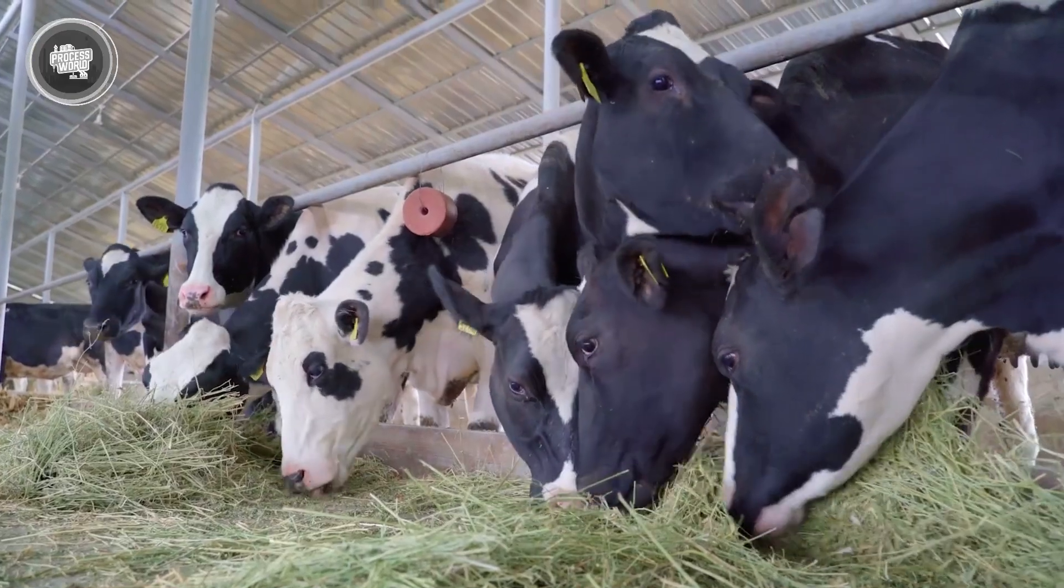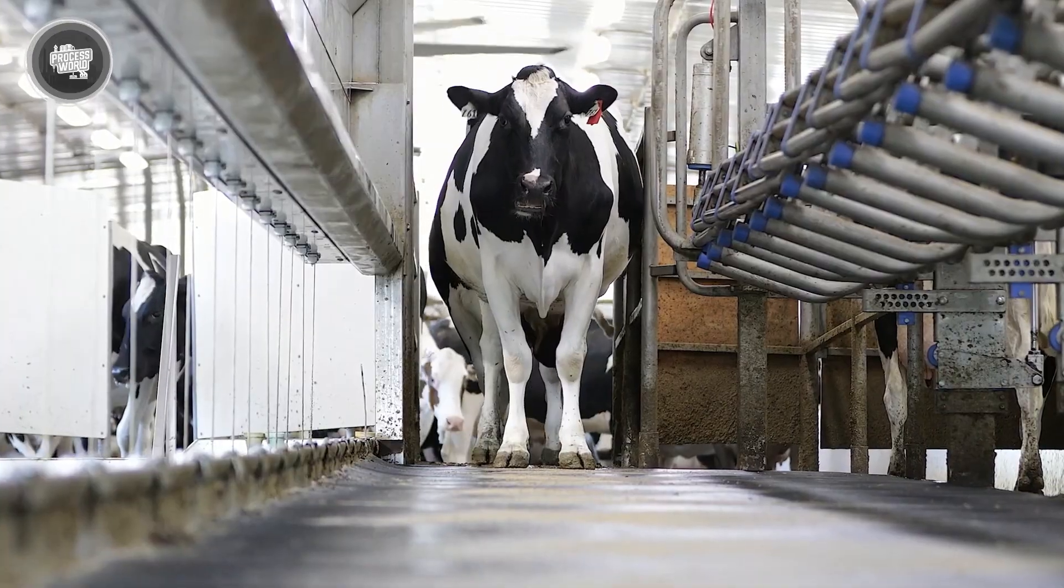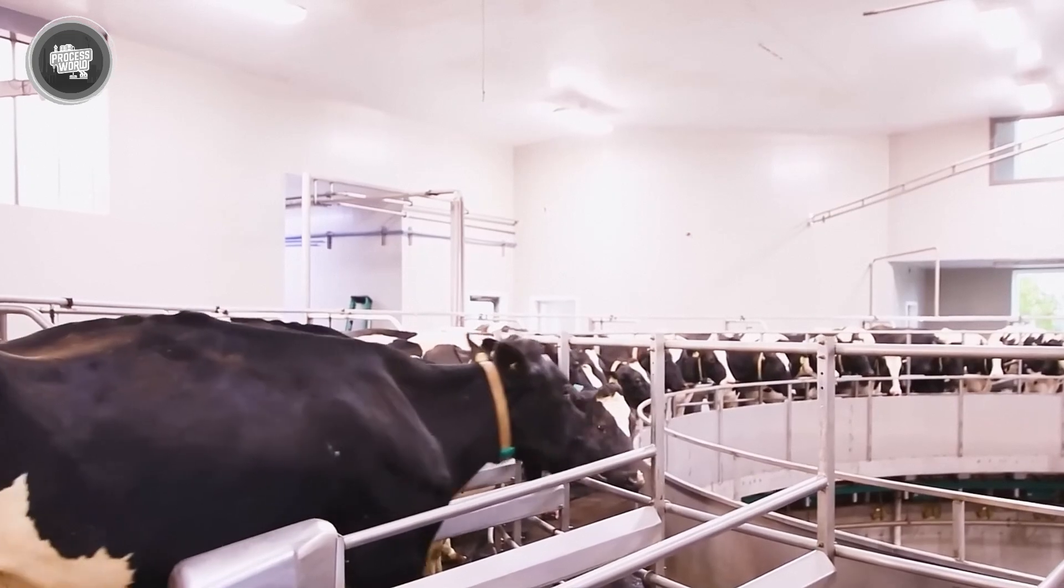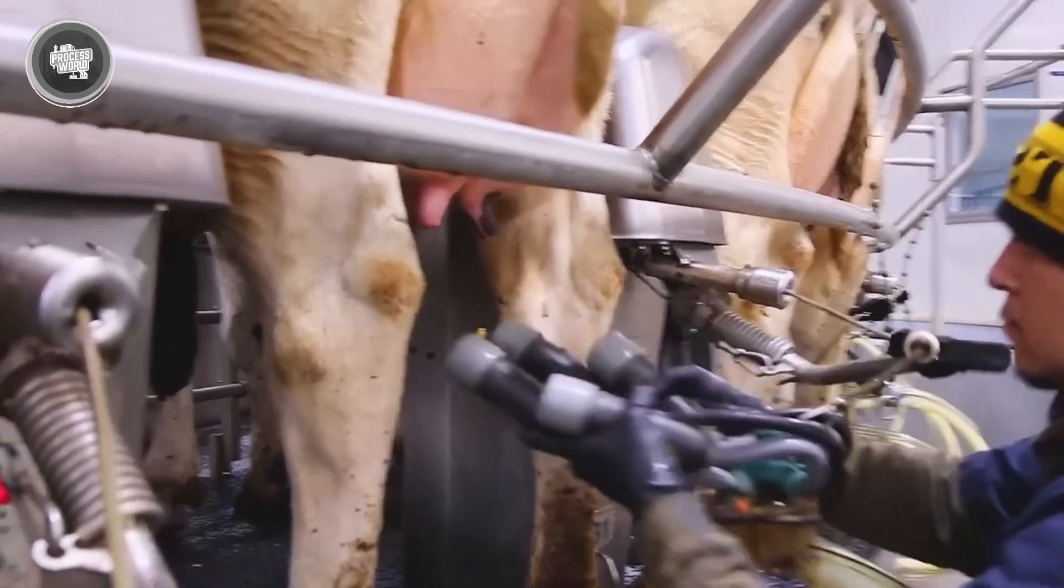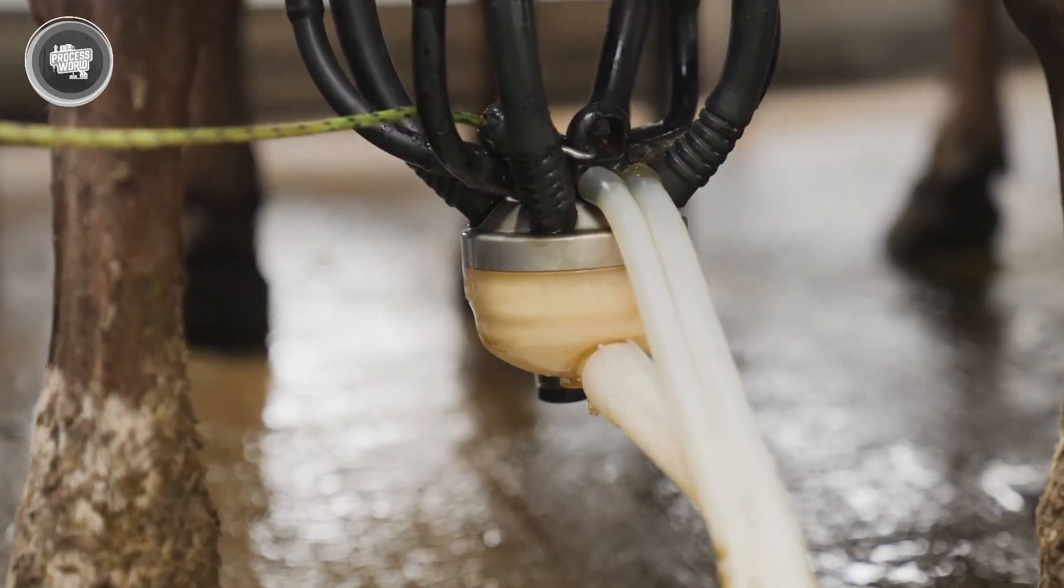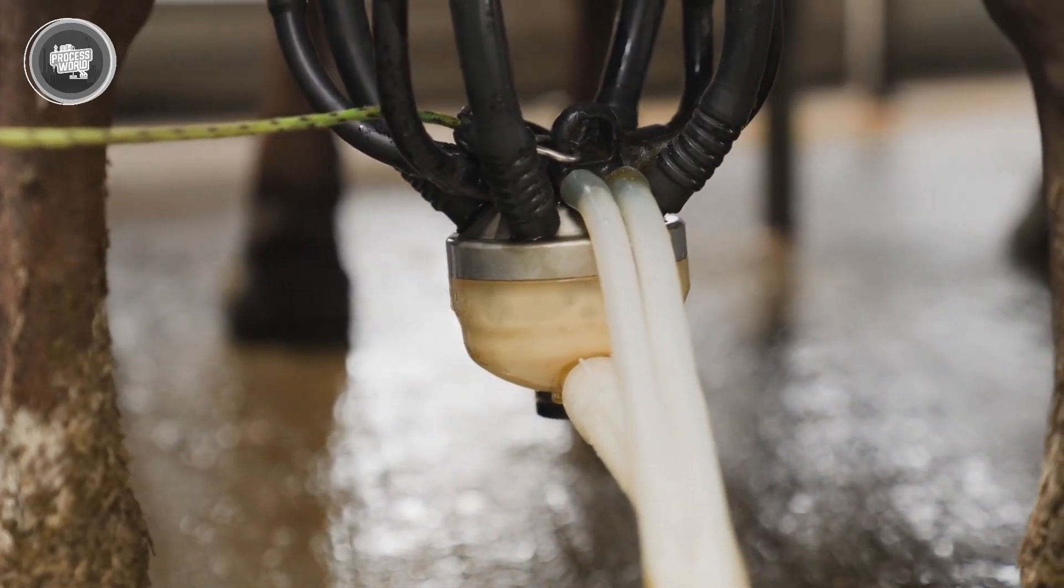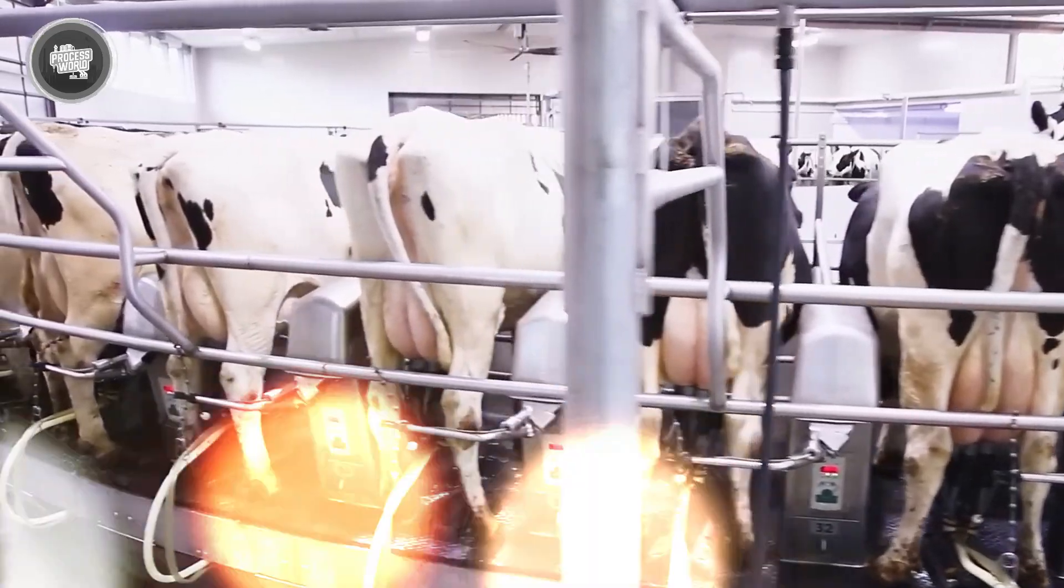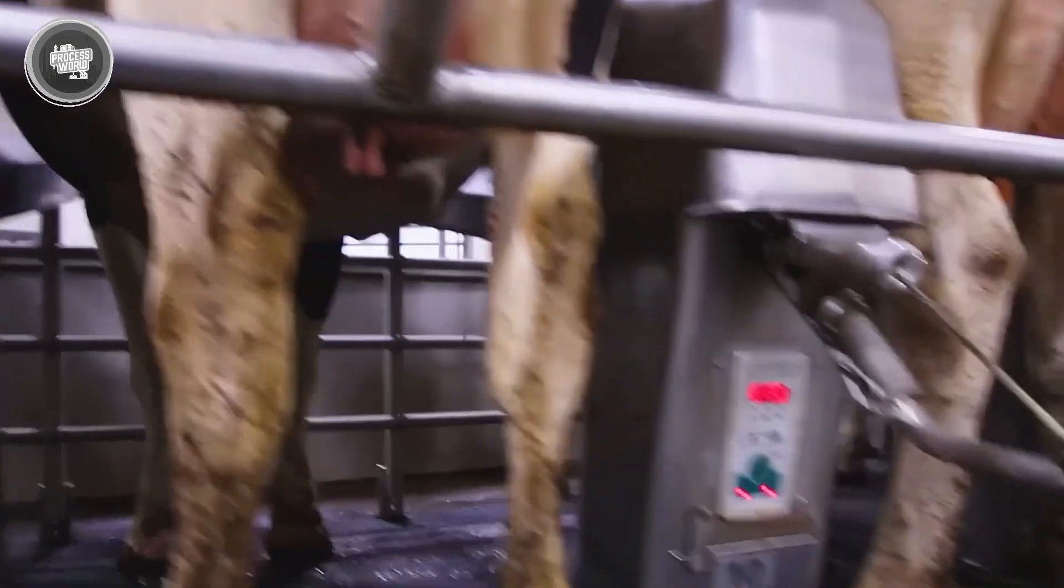A well-fed cow may generate roughly 38 liters of milk every day and sip up to 200 liters of water. Automated machinery built to be gentle and effective handle milking. The cows enter a milking parlor where soft rubber cups are fastened to their udders. By producing a mild vacuum, these cups enable the milk to pass via sterile tubes into storage tanks. Every session runs seven minutes or so. To guarantee perfect operation, the devices stop automatically after the cow is completely milked.